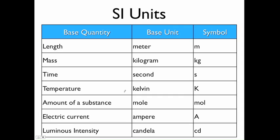So SI units. We have quite a few in physics, and this is the international system of units, and so we have a base quantity and a base unit and then the symbol for that. The first one is length. You would use the length of a car or how tall you are, and the base unit for that is the meter, and the symbol is just a little m.